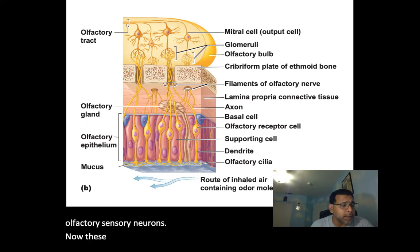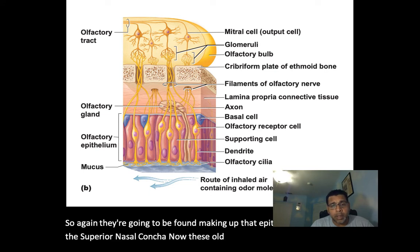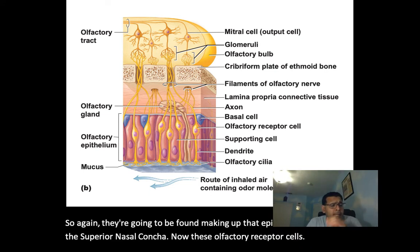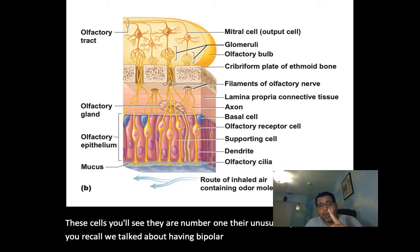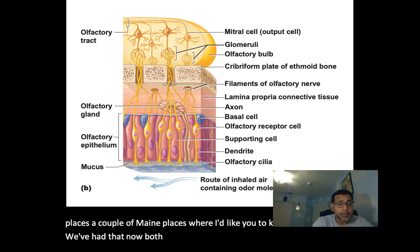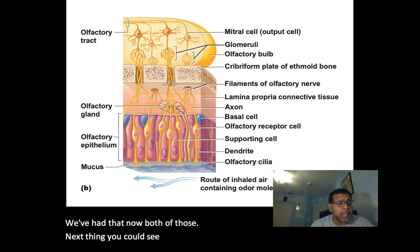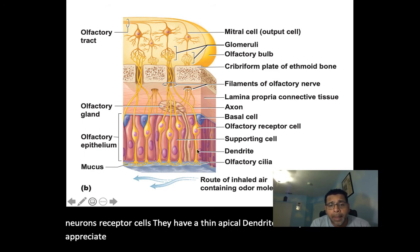These olfactory receptor cells are unusual bipolar neurons — we've talked about bipolar neurons in a couple of main places. Each of these olfactory sensory neurons has a thin apical dendrite, which you can appreciate for each neuron shown here.